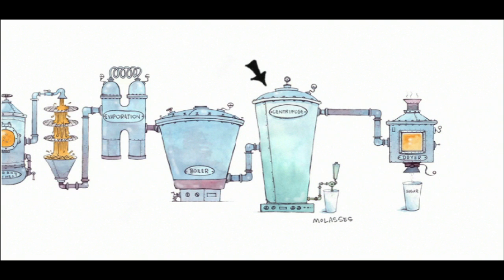From there, it is sent through a centrifuge to separate the sugar crystals from the molasses. Finally, the sugar crystals are dried and stored.